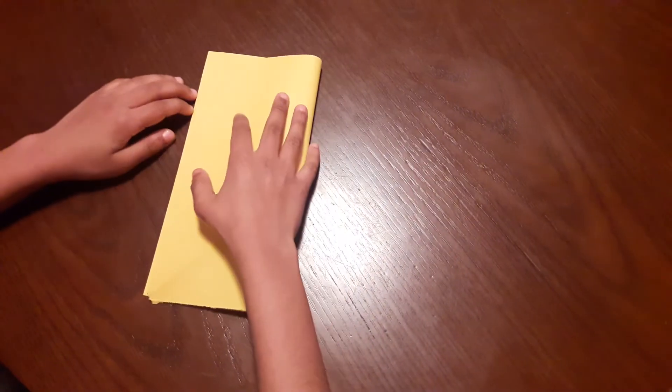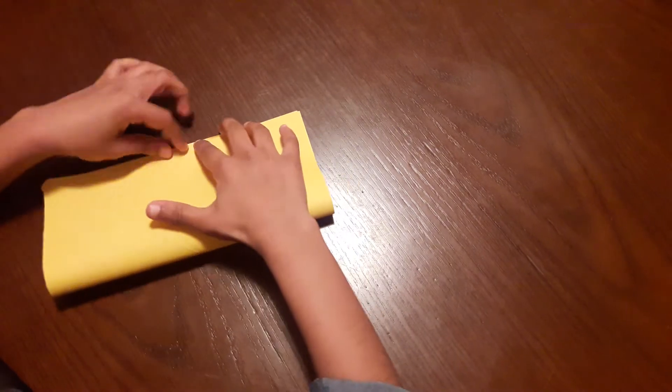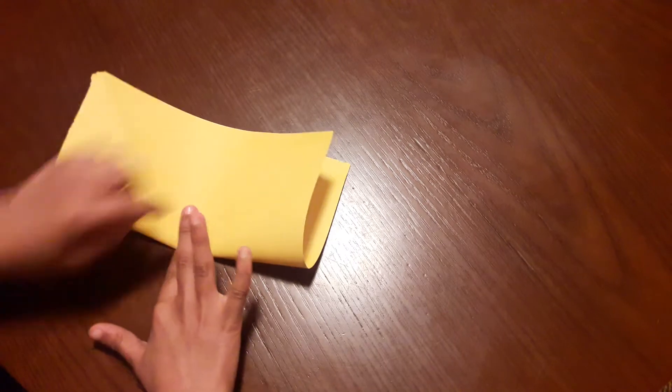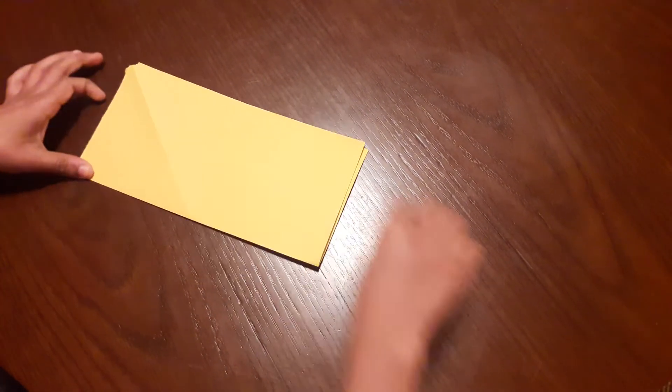The first step is to fold it in half. Do it flat, line up the edges, crease it down the middle, and crease it with your nail.